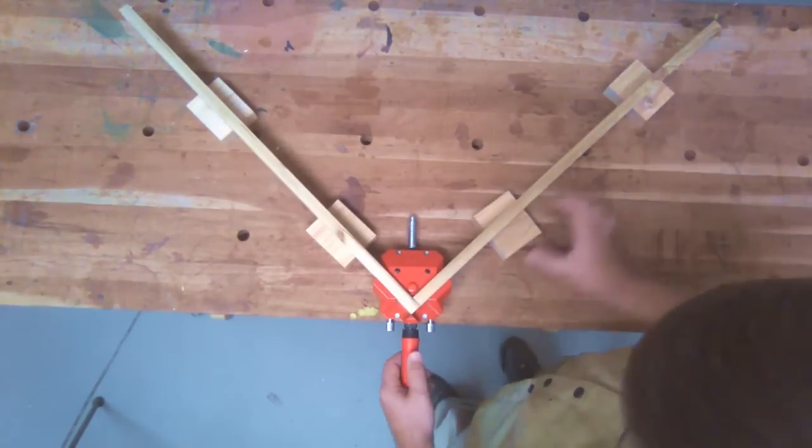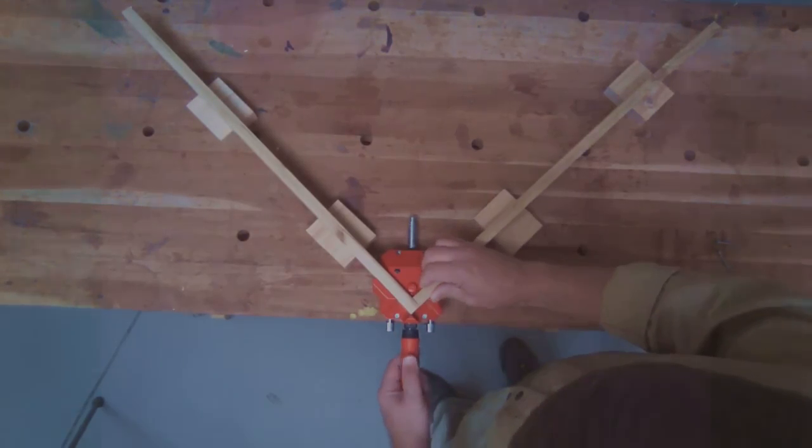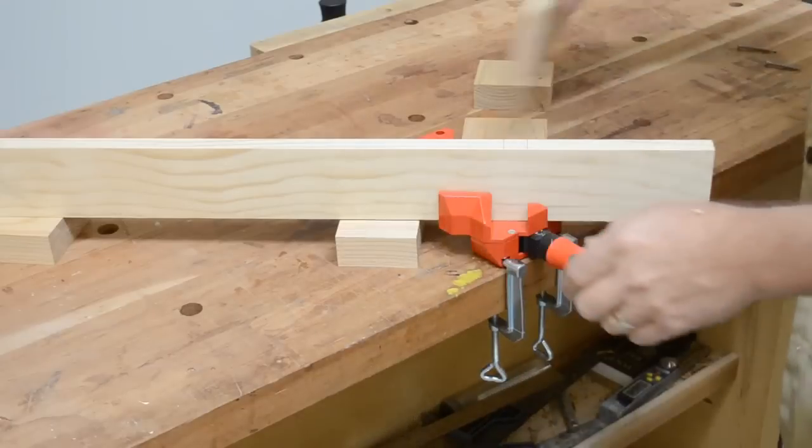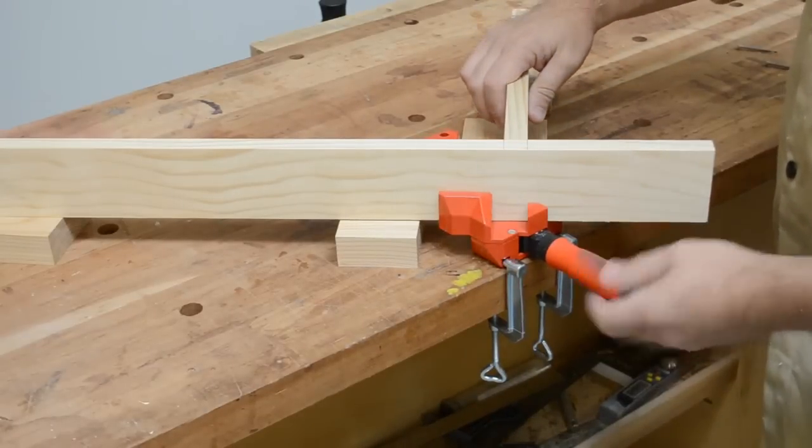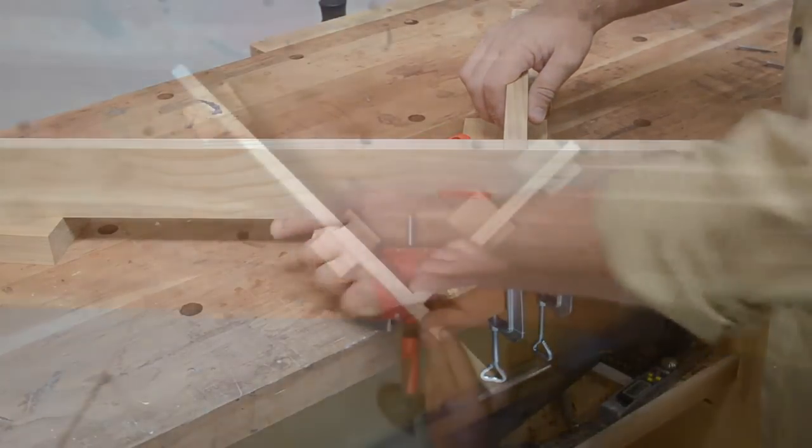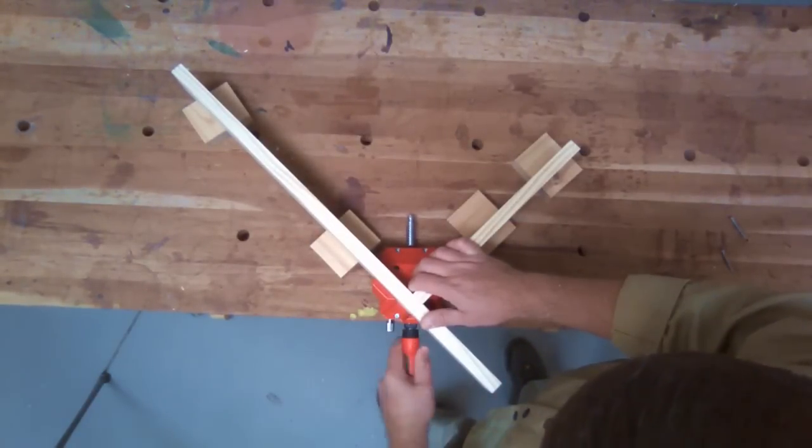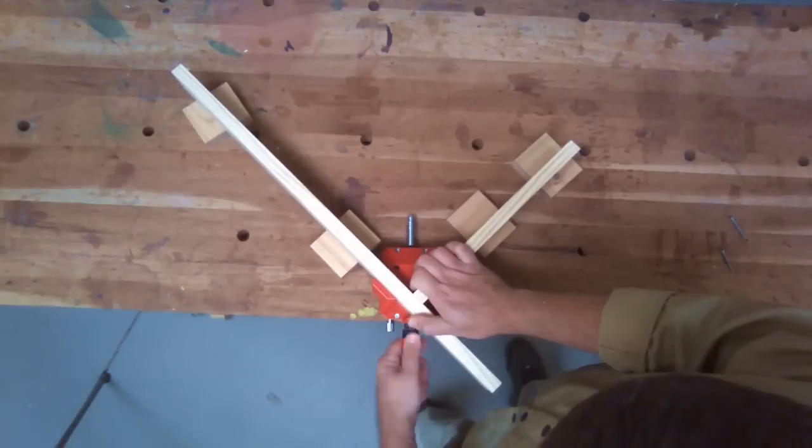The angle clamp is perfectly capable of managing tall parts standing on edge as well, and it's not restricted to clamping only corners. The back edge of the clamp is open, allowing parts up to an inch and an eighth thick to pass by, creating T-joints.